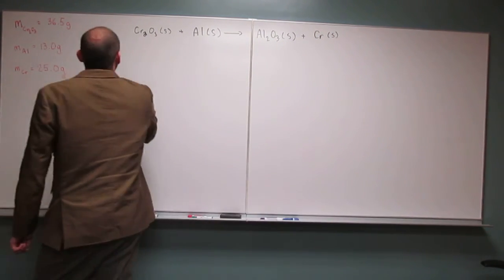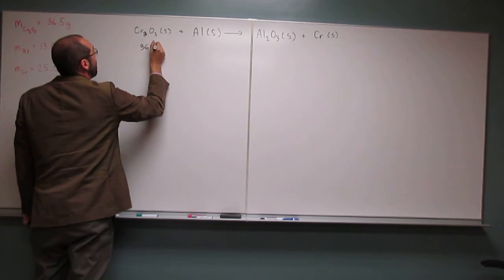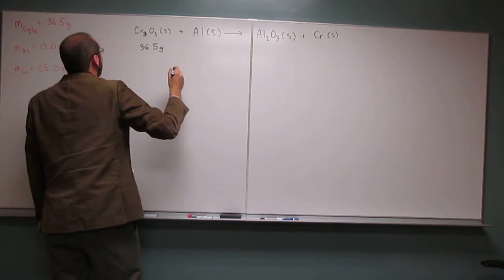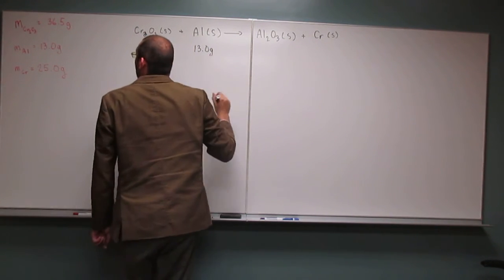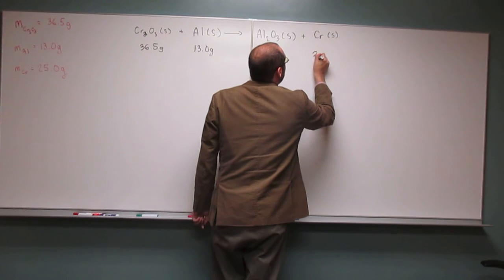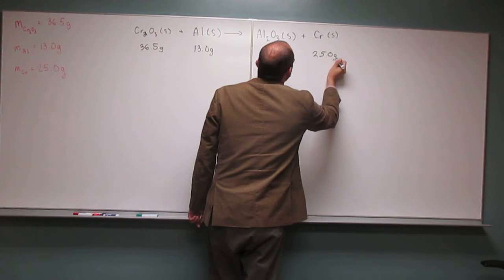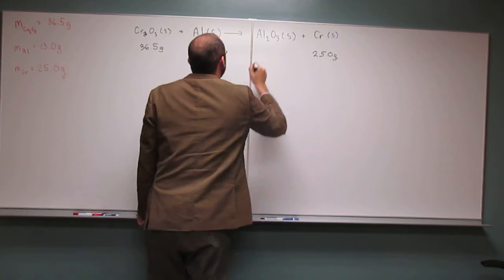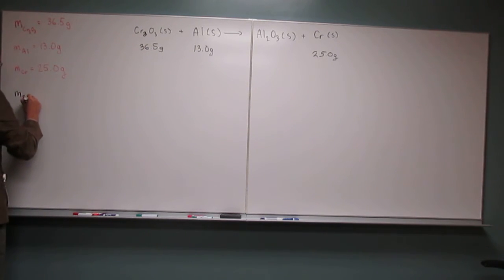And then it gives you masses for these things: 36.5 grams, 13.0 grams, 25.0 grams. And then you're asked, what is the mass of aluminum oxide?